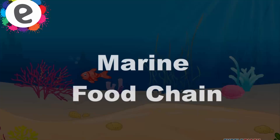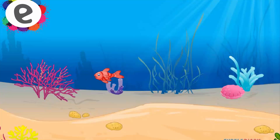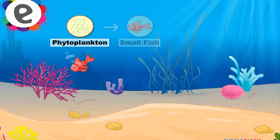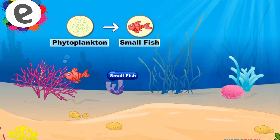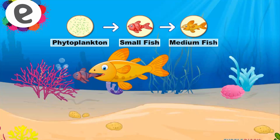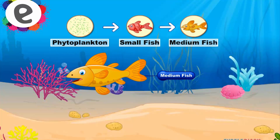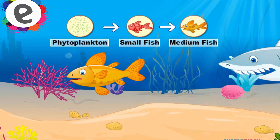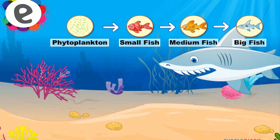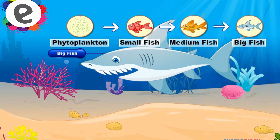Marine food chain. A marine food chain starts with phytoplankton which are eaten by small fishes. Then the small fishes are eaten by medium sized fishes. And at last the medium sized fishes are eaten by big fishes.